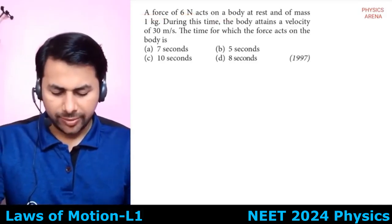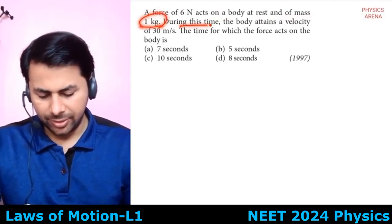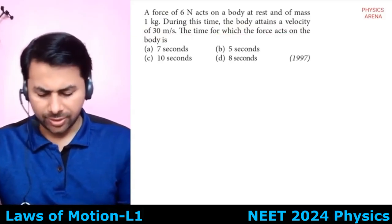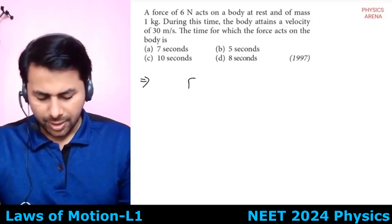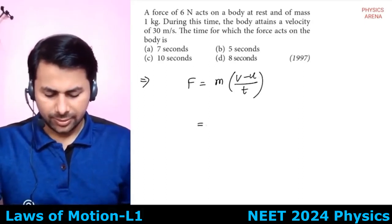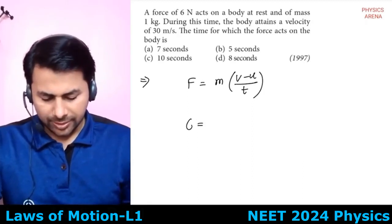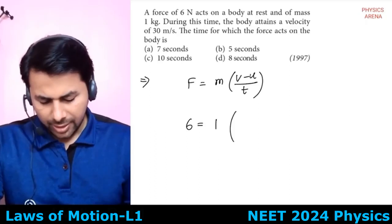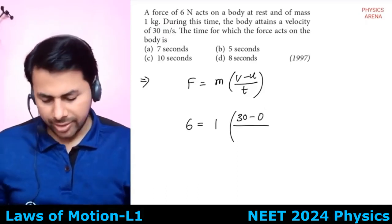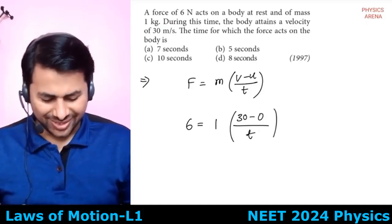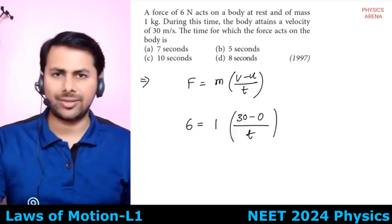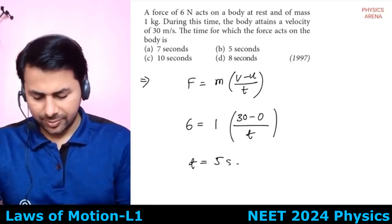Question: a force of 6N acts on a body of mass 1 kg at rest. During this time the body attains a velocity of 30 m/s. Find the time for which the force acts. Using F = m(v−u)/t: 6 = 1×(30−0)/t, so t = 30/6 = 5 seconds. Option B.